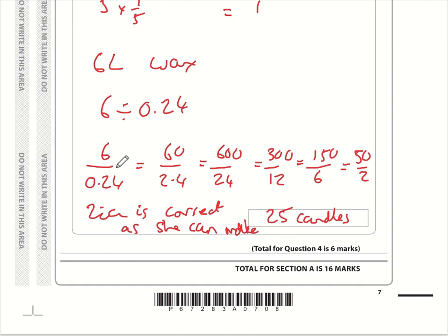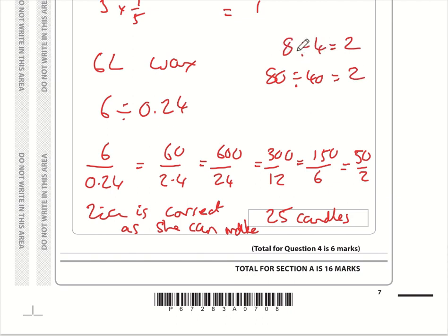This last part might seem complicated but all we're doing is equivalent division. What is 8 divided by 4? It's 2. And 80 divided by 40 is still 2. If you multiply both numbers by 10 you get exactly the same answer. It doesn't matter what you do to the two numbers as long as you multiply or divide them by the same figure — the answer is still the same. Here we multiplied both numbers by 10 twice, then divided by 2 and by 3, and still got 25. That takes us to the end of Section A.